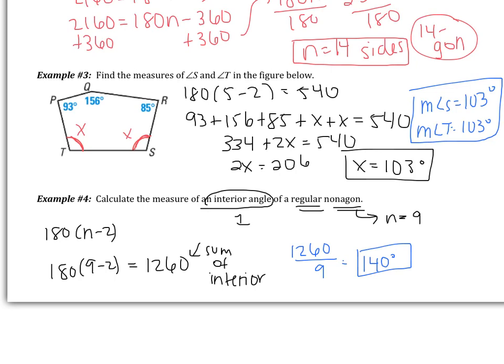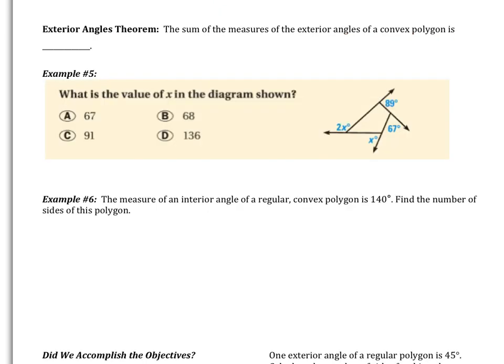Moving on to exterior angles: the exterior angles theorem states that the sum of the measures of the exterior angles of a convex polygon is 360 degrees. So for interior angles there's a formula, but exterior angles always sum to 360 no matter what.